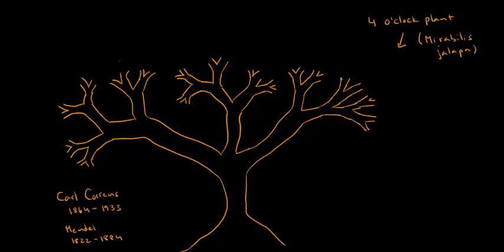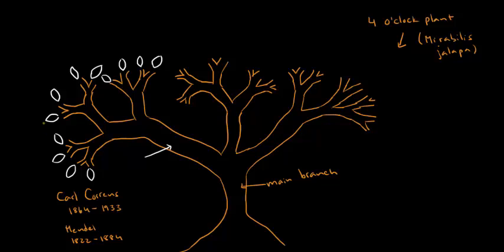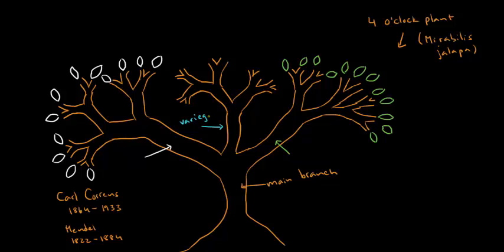One very interesting thing about this plant is that you can have within the same plant leaves that are a lot of different colors. The leaves that come off one branch are going to be white, the leaves from another branch are going to be green, and then the leaves that come off of another branch are variegated — meaning that they have a pattern of green and white mixed.